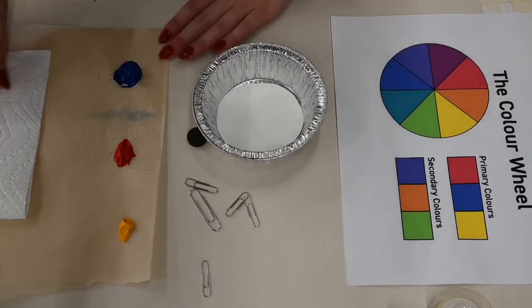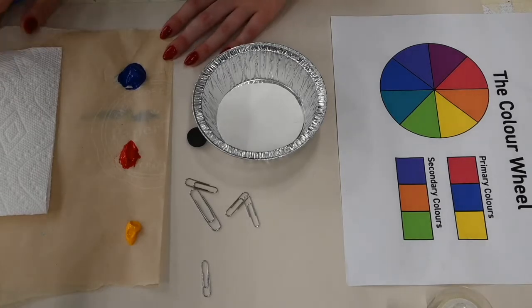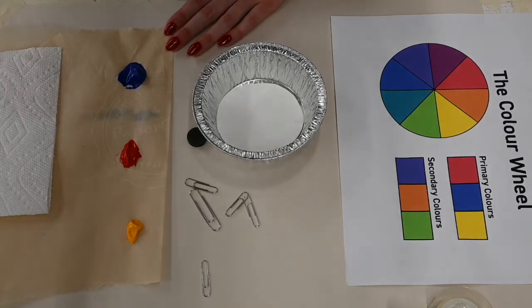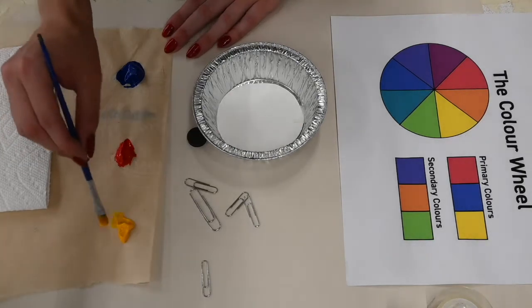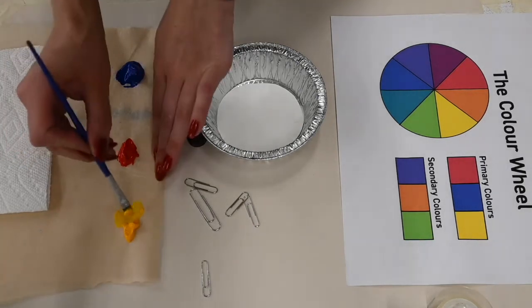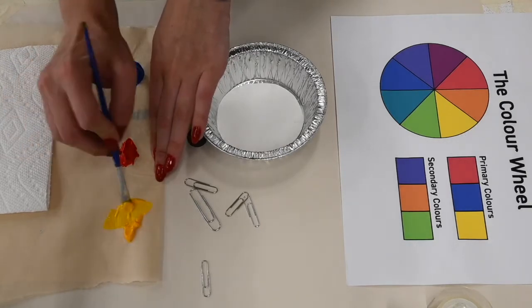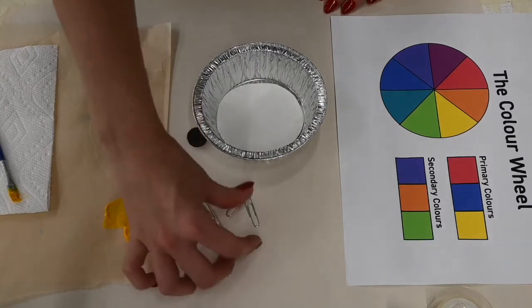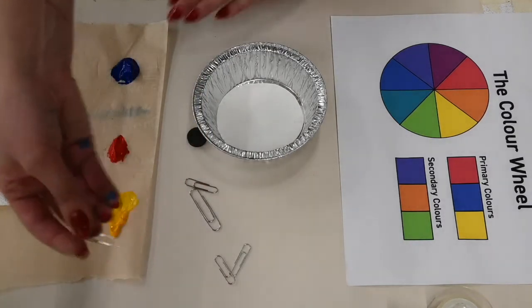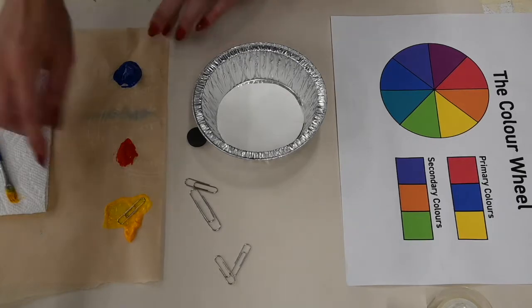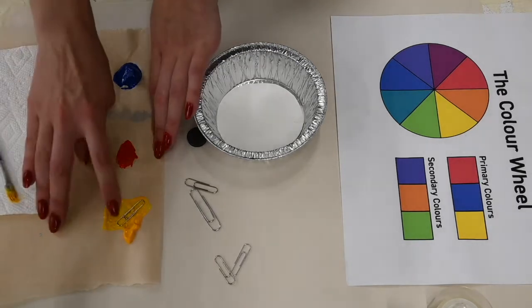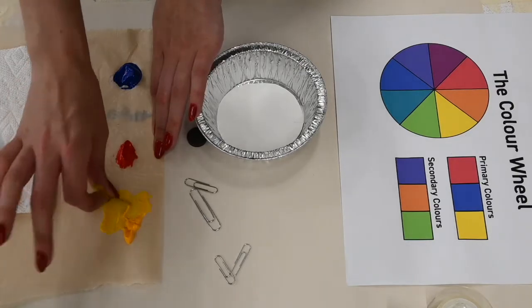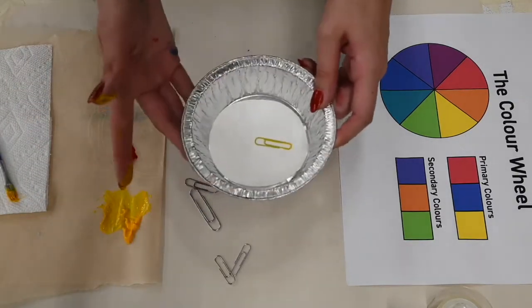Okay, next I put out my three primary colors and I'm going to choose one to start with. So I'm going to start with yellow and I'm just going to water it down quite a bit. And you might have to test it and then water it down again, but that's okay. Now I'm going to grab a paper clip. I'm going to toss it in my paint. I'm just going to go ahead and use my fingers because they're going to get messy anyways.